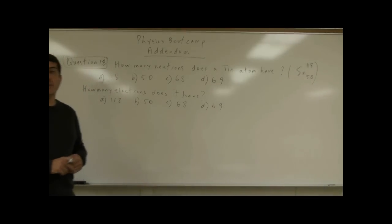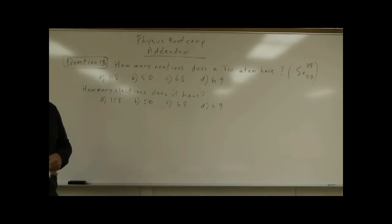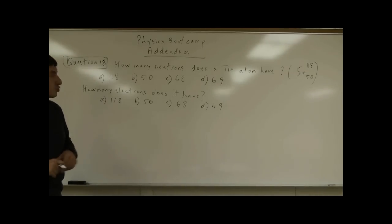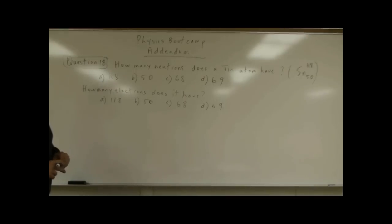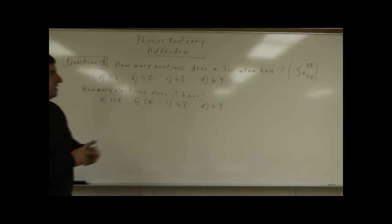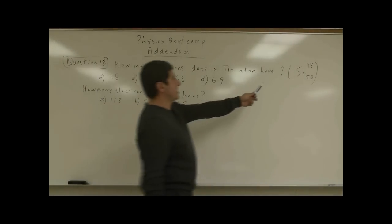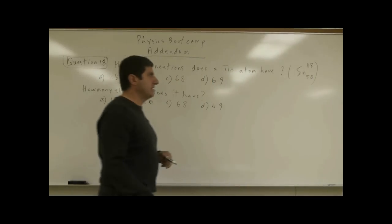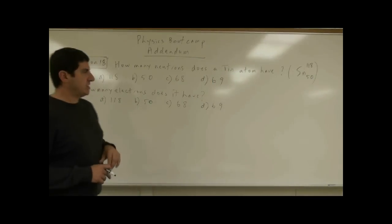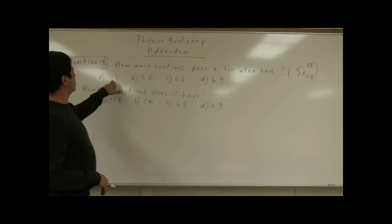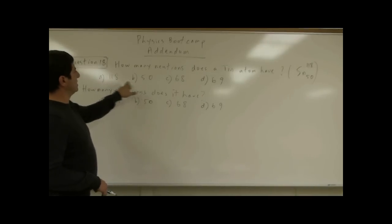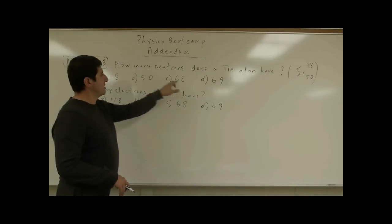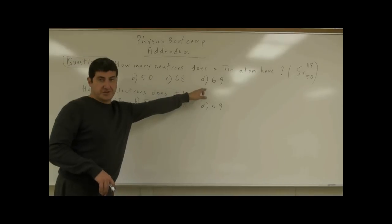Now we get to question 18, which is about atomic number, atomic mass, and neutron number. It says: how many neutrons does a tin atom have? And it gives you Sn-118 with atomic number 50. The answer choices are 118, 50, 68, or 69.